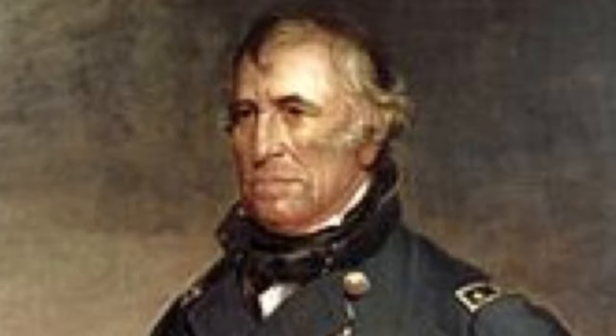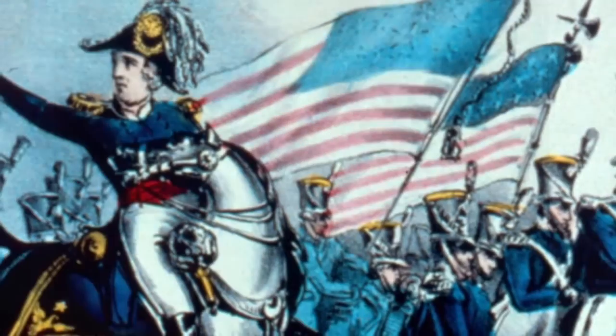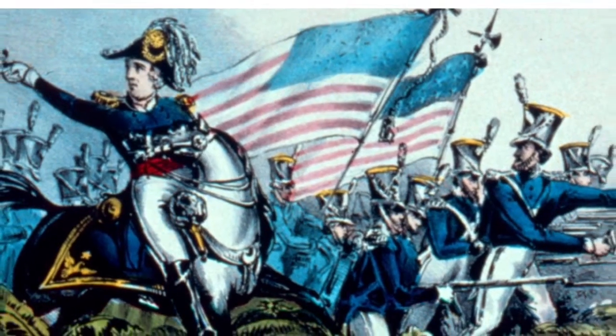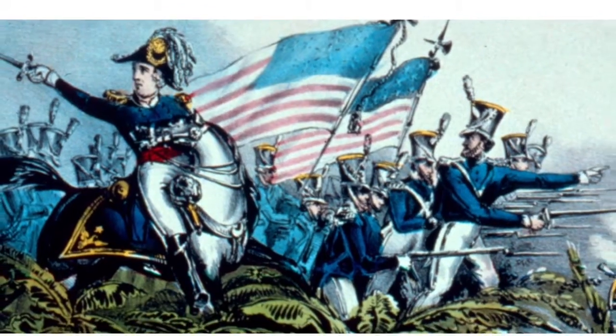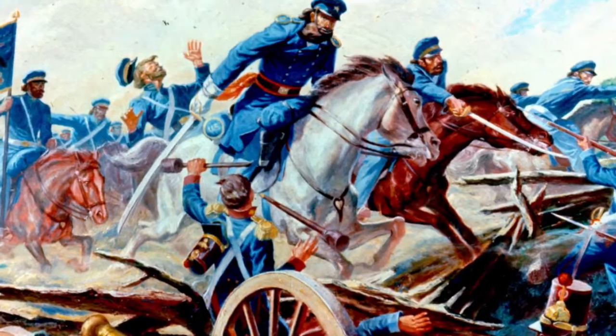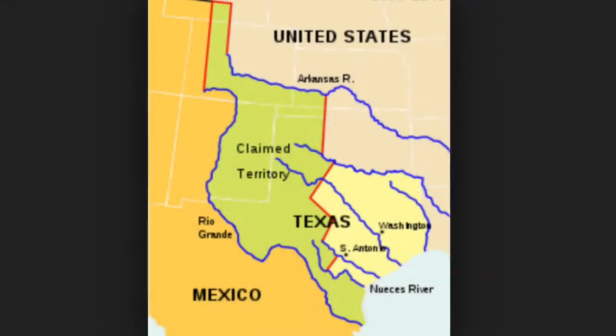General Zachary Taylor was ordered to march soldiers across the Mexican border. On April 25th, 1846, Mexican soldiers attacked Taylor's force. General Taylor said, "Hostilities may now be considered as commenced." President James K. Polk then responded saying they had invaded our territory and shed American blood upon the American soil. Congress passed a declaration of war against Mexico. This is what began the Mexican-American War.